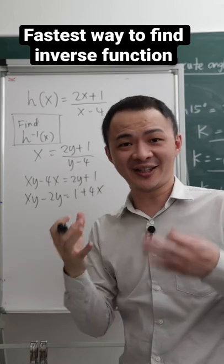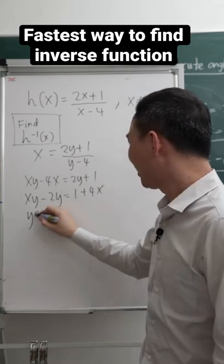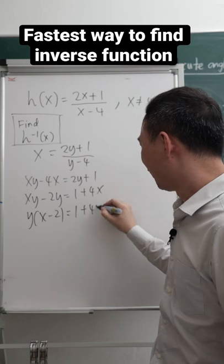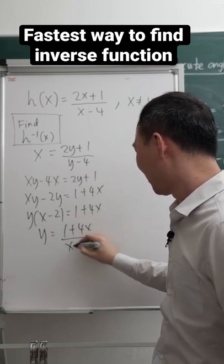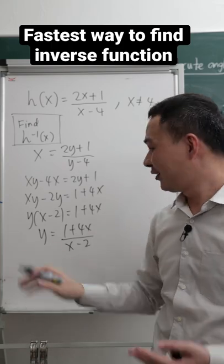Alright, now I can factorize out my y. So y times x minus 2 equals to 1 plus 4x. Now my y as a subject is ready by moving x minus 2 to the other side. Then what is my y?